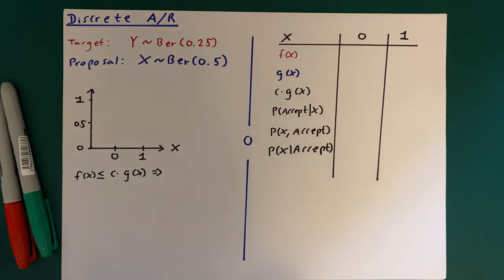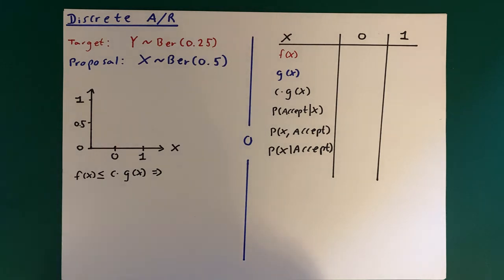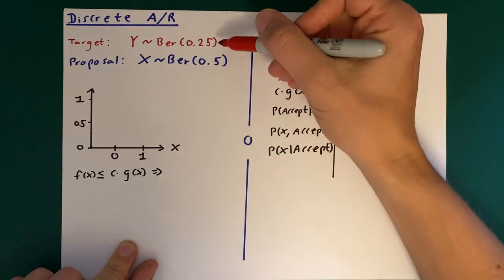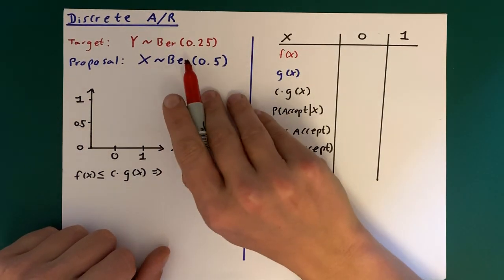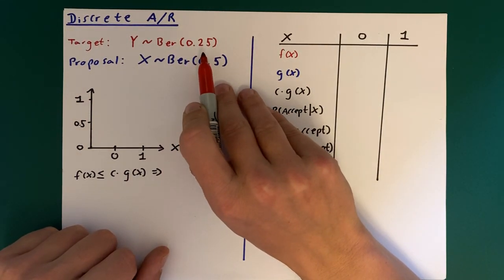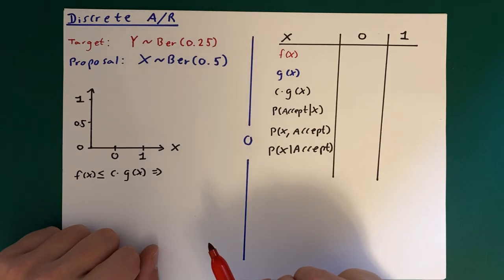So we want to simulate from a target distribution, which is the Bernoulli distribution with probability of getting a one which is 0.25. So we could draw its probability mass function, which is the discrete analogue of the probability density function.